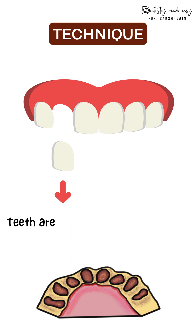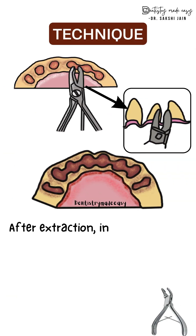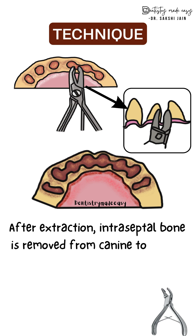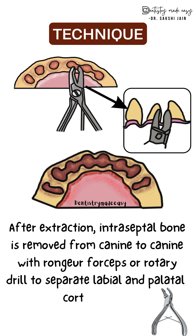Moving towards the technique: first, the teeth are extracted from canine to canine — canine to incisor and incisors to canine — as atraumatically as possible. According to Dean, the most posterior teeth should be removed first to preserve the integrity of the labial cortex and to avoid disturbance to the blood supply. Next, the interradicular or intraceptal or interdental bone — the bone present between two teeth — is removed from canine to canine with the help of rongeur forceps or a rotary drill, to separate the labial and palatal cortical plates.